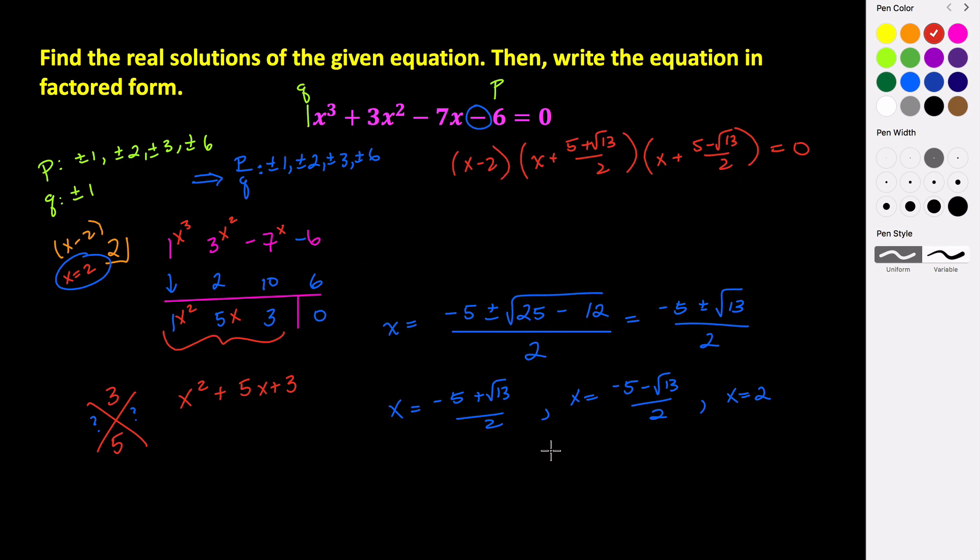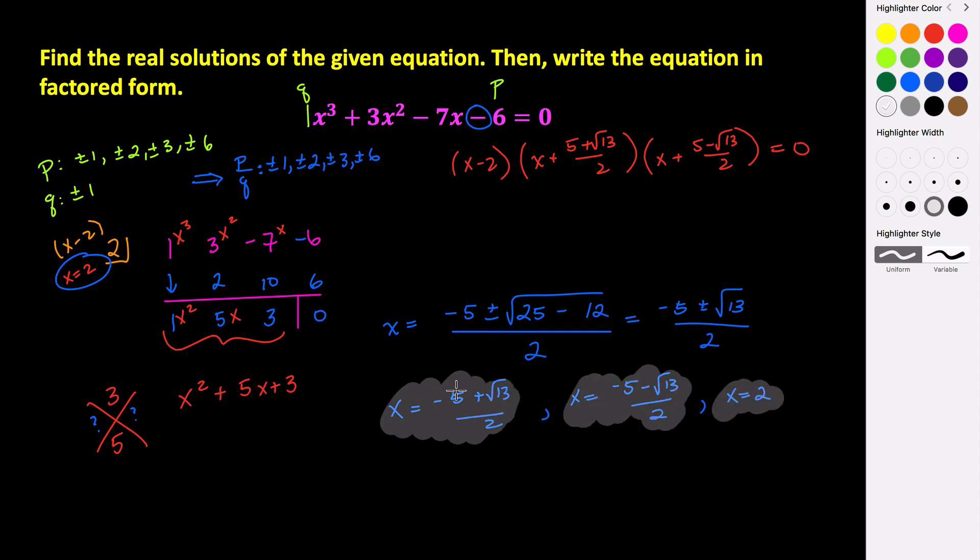So this factored form gave us these zeros. So here are our zeros. There's 1. There's 2. There's 3. These are all real zeros, by the way, because they're not imaginary values. They're just not all rational. So we have 2 irrational and 1 rational zero. And then our factored form is here.